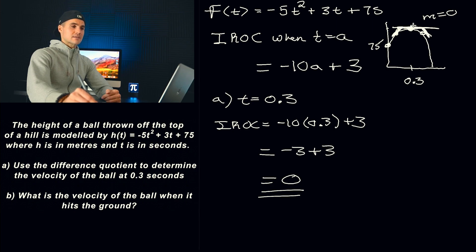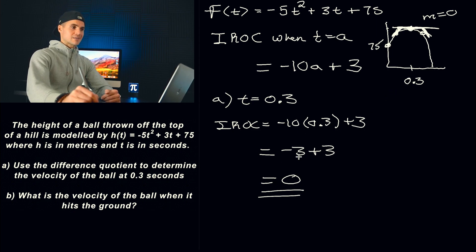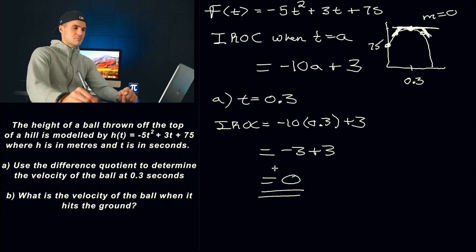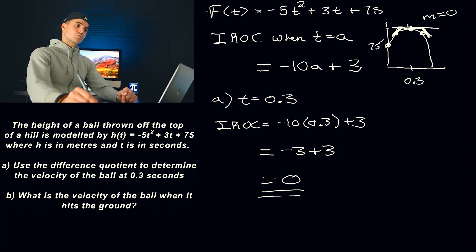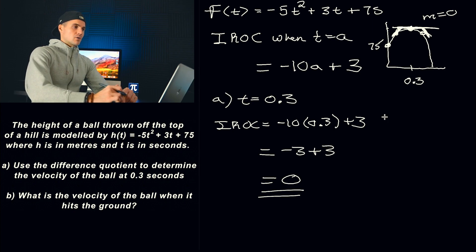Right after that time, the ball starts going toward the ground and the velocity becomes negative. I wanted to go over a question like this in case you get an instantaneous rate of change of zero and you're confused — it just means the ball has reached its maximum height at that point, the t value of the vertex. That's the answer to part A.